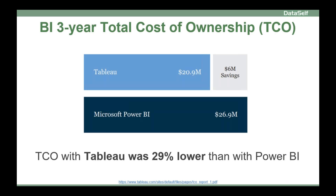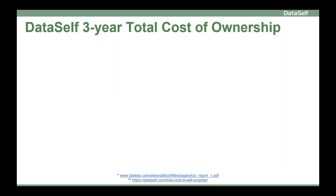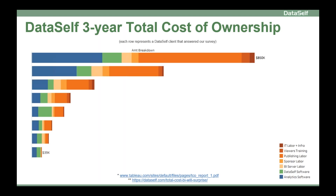When we learned about the Tableau survey and were excited about the findings, we thought: what's happening in our own client base? We focus on mid-sized organizations, and in the course of 12 years in business, we've deployed analytics and BI software to hundreds of these organizations. We thought, what is their average total cost of ownership? Eight of our clients entered our survey, and each bar or line represents one of these eight clients. This is a good representation of our client base — from one very large client that invested a lot over three years, to a very small client that invested much less, and several in between.